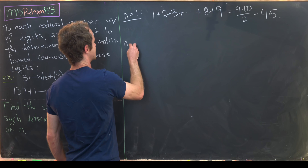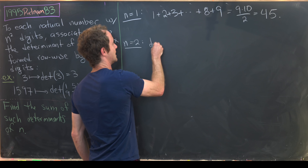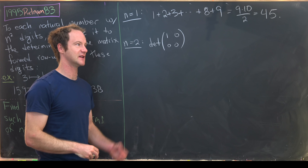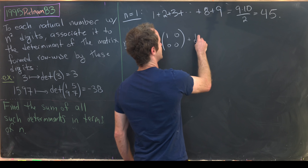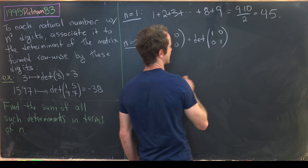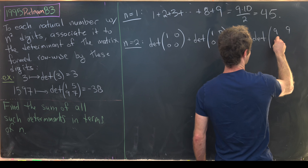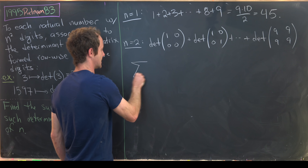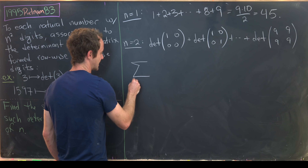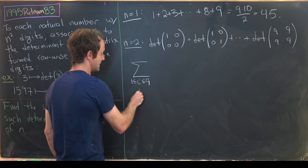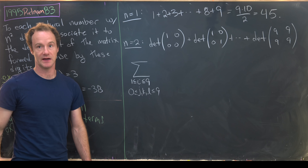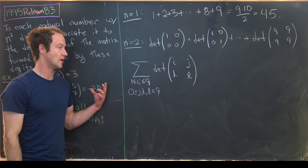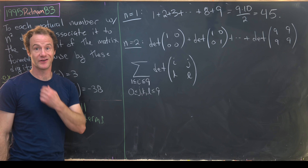Let's move to the case n=2. We start with the determinant of the matrix for the smallest four-digit number 1000, then 1001, all the way up to 9999. Our goal is to calculate that sum. That's the same as the quadruple sum where i ranges from 1 to 9 and j, k, l range from 0 to 9, taking the determinant of [i,j;k,l]. This allows us to sum over all four-digit numbers.